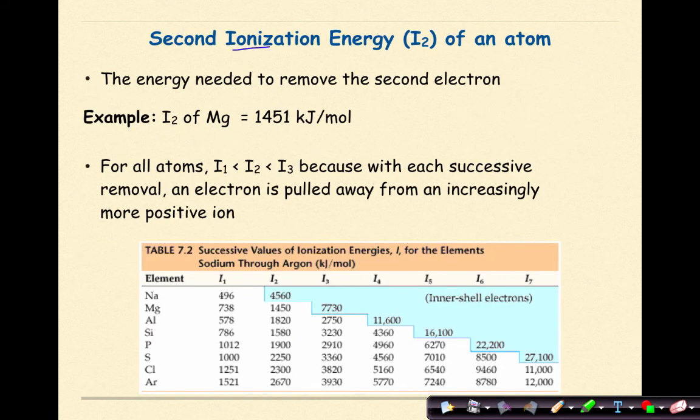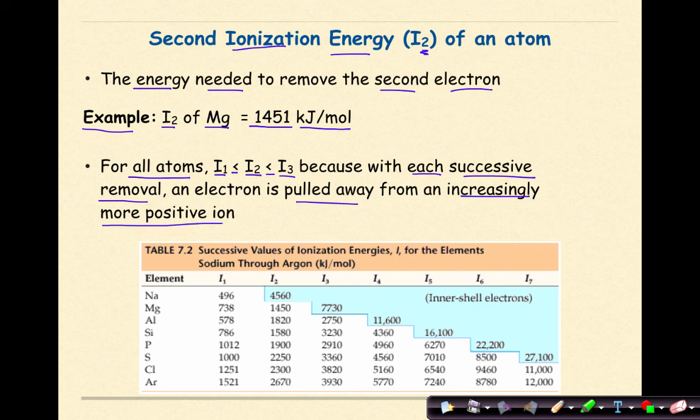The second ionization energy, or I with a little sub two of an atom, is the energy needed to remove the second electron. For example, the second ionization energy of magnesium is 1451 kilojoules per mole. For all atoms, the first ionization energy is going to be less than the second ionization energy, which is going to be less than the third ionization energy, because with each successive removal, an electron is pulled away from an increasingly more positive ion.